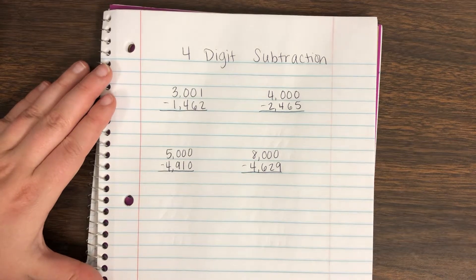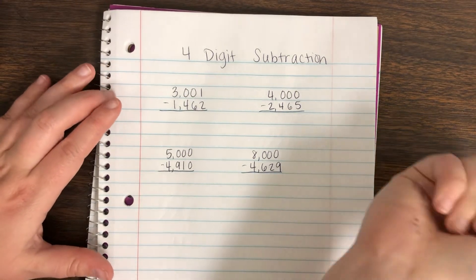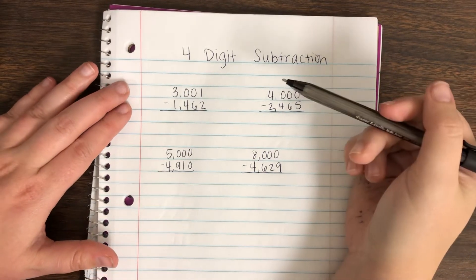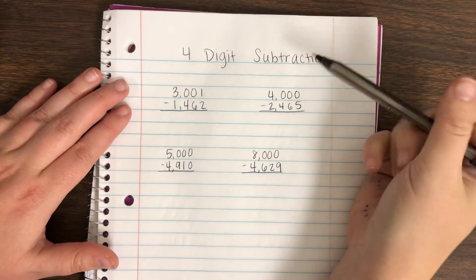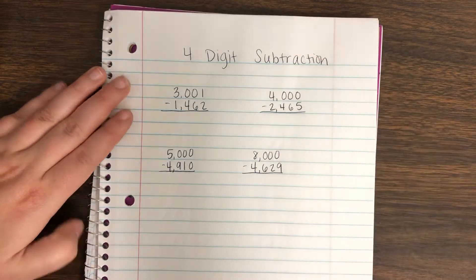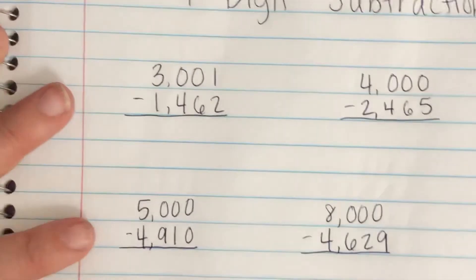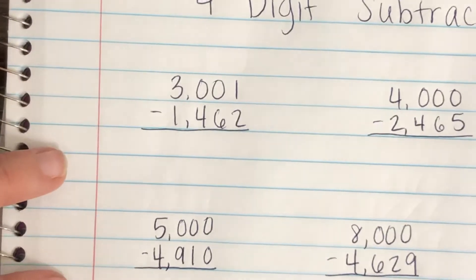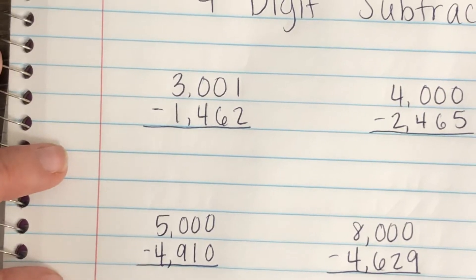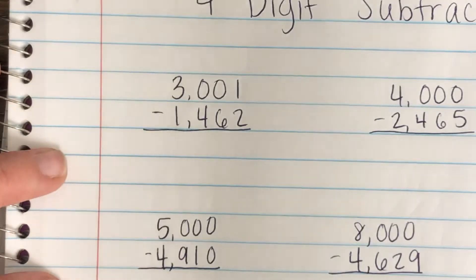Hey everybody, in this video we are going to continue talking about four-digit subtraction except we are doing across zeros. First I want to show you a problem that only has two zeros at the top and what that looks like, so we're going to go ahead and get started here.